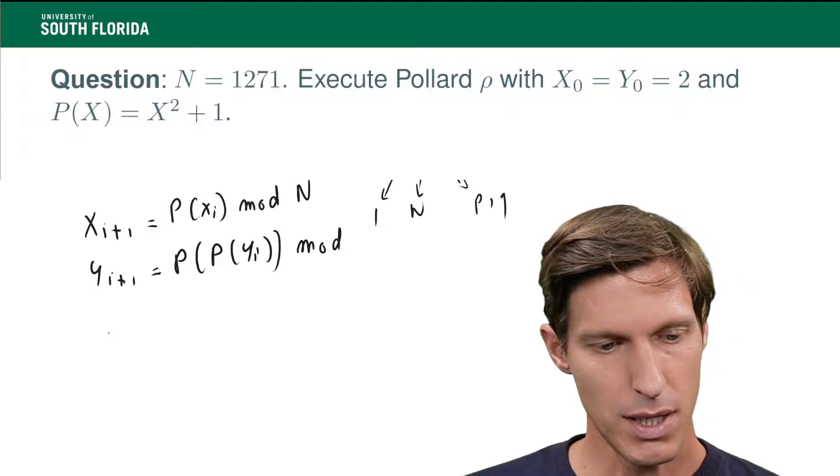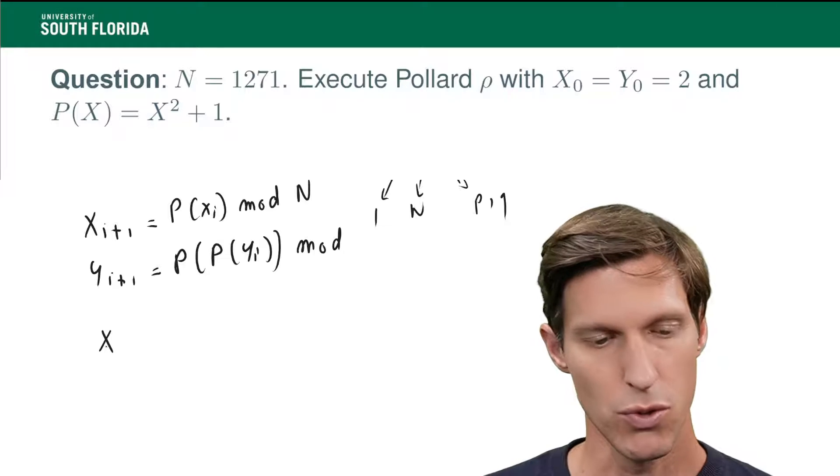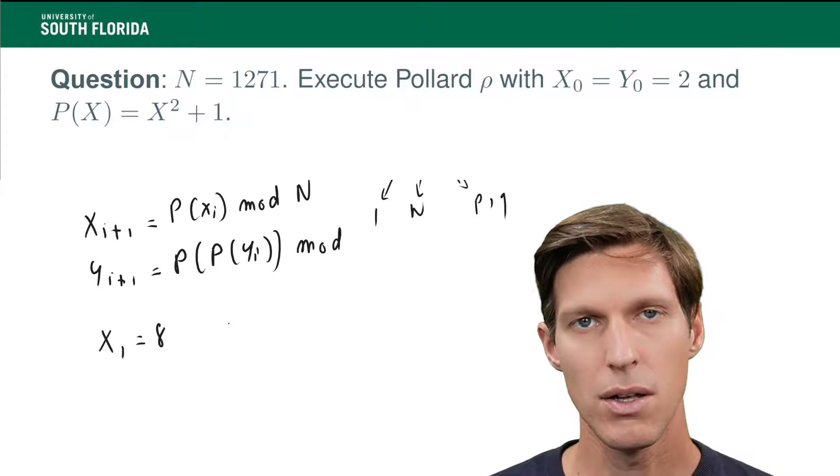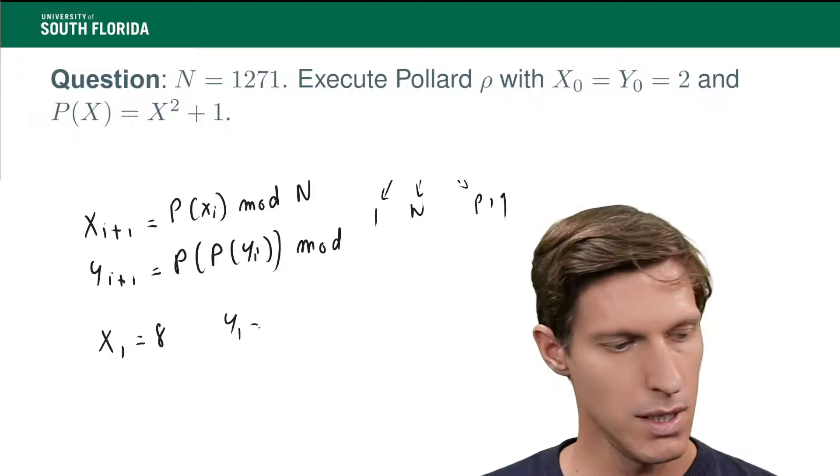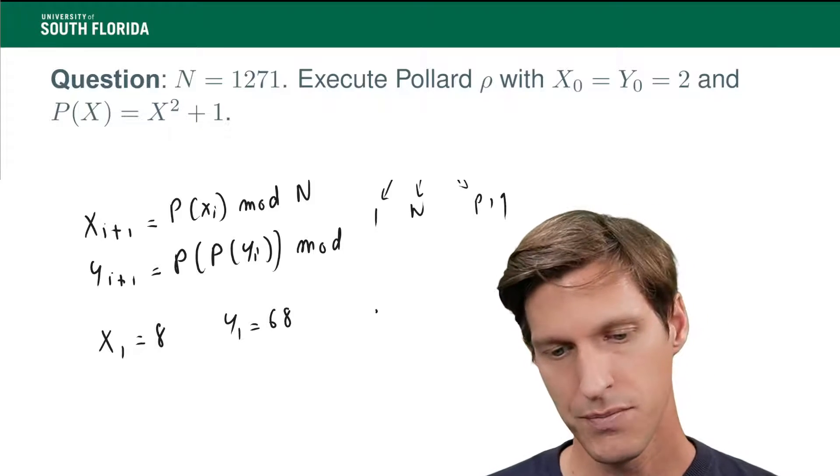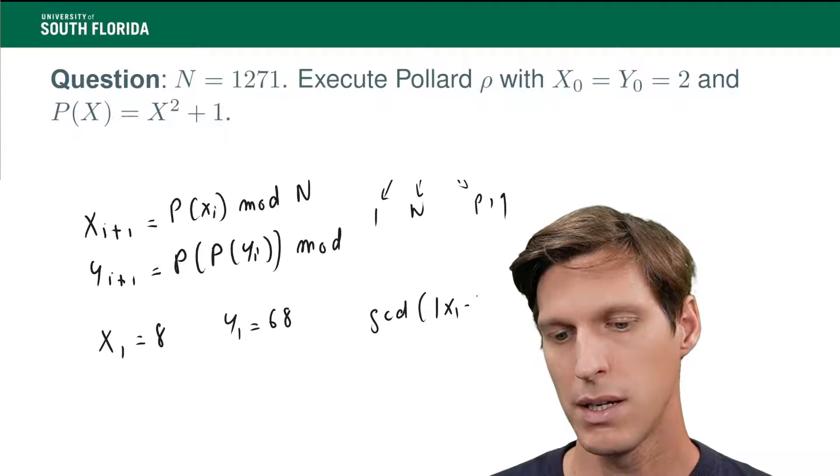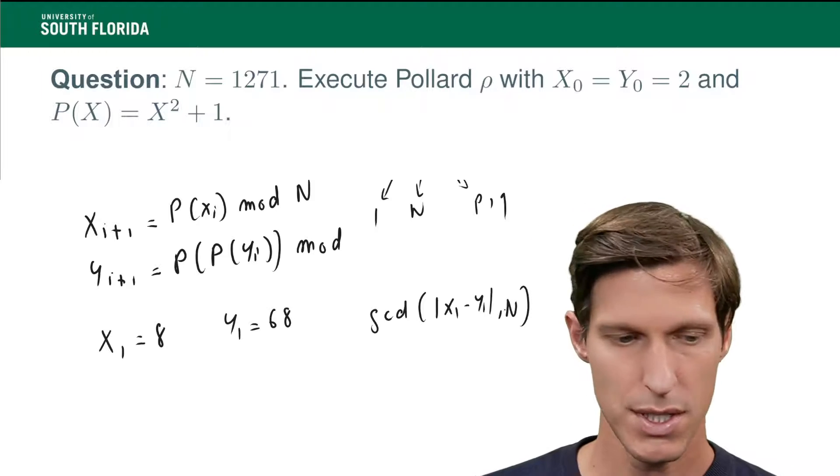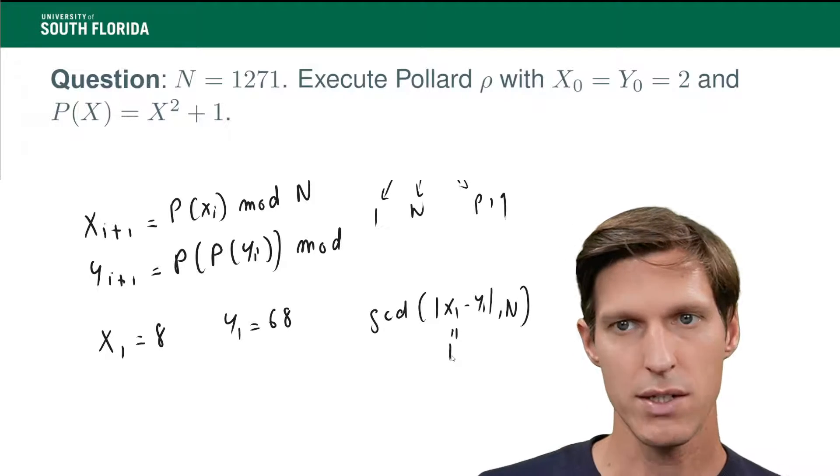Here we have x0 equals y0 equals 2. Now, x1 will be equal to 8. So again, I'll let you also do that with your calculator. y1 equals 68. And now, the GCD of x1 minus y1 and N. So this is 1, which means we need to go to the next step.